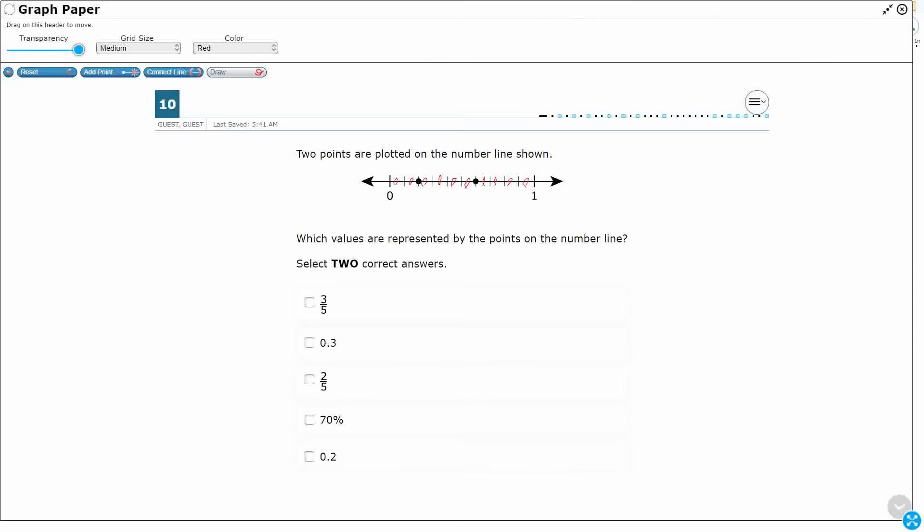Now, each pip or each vertical line is going to represent the numerator. So these are all tenths. So the second tick mark here is going to be two tenths. And then I've got three, four, five, this is six tenths. Okay, so two tenths and six tenths. I don't see either of those, but that's okay. We are going to represent these in different ways.